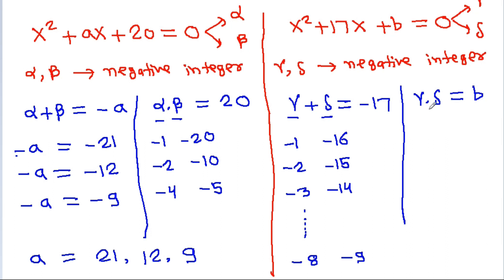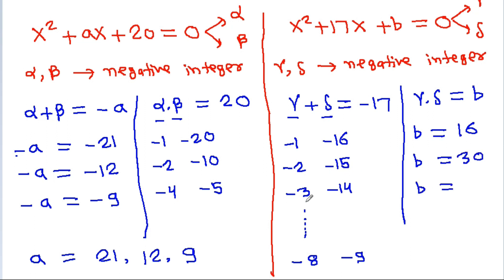Since b equals gamma times delta, b will be equal to minus 1 times minus 16, which is 16; or minus 2 times minus 15, which is 30; or minus 3 times minus 14, which is 42; or 72.